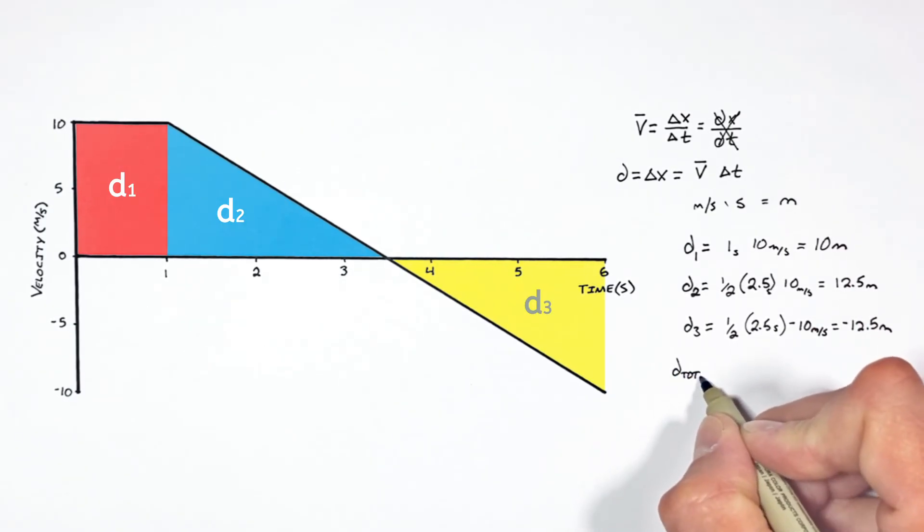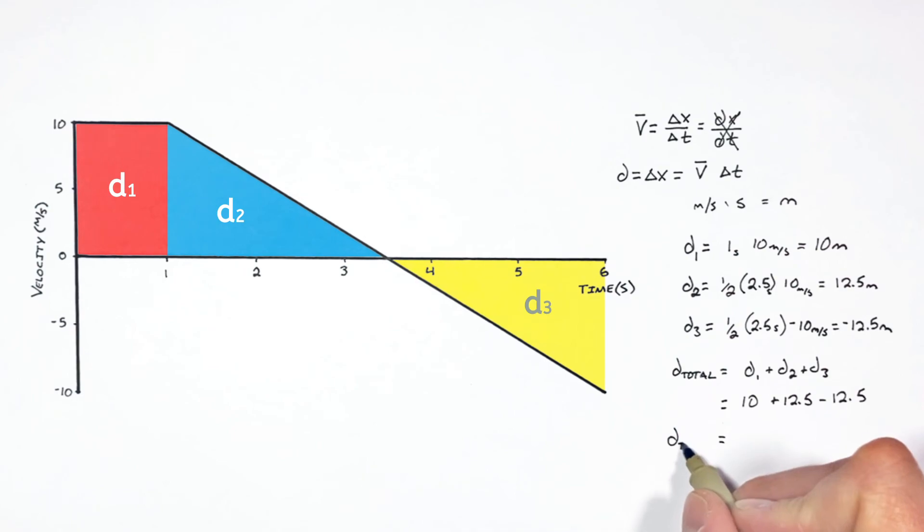Now the total displacement is just the sum of these three displacements, and adding those all up. And we find the total displacement from start to finish in this problem is 10 meters.